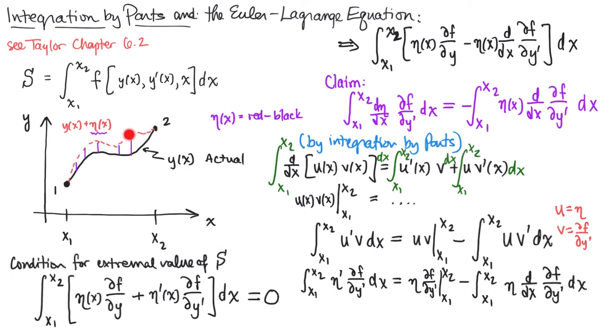Because we're looking for all trajectories that start at point one and end at point two. So any of these hypothetical deviations, these red curves, they all are equal to the black curve at the end point, eta is zero at the end point. So because eta is zero at the end point,